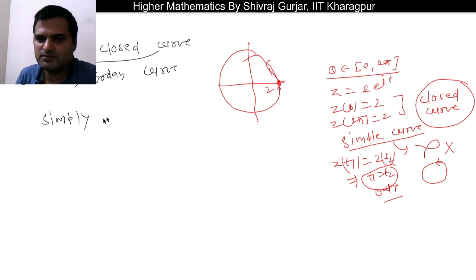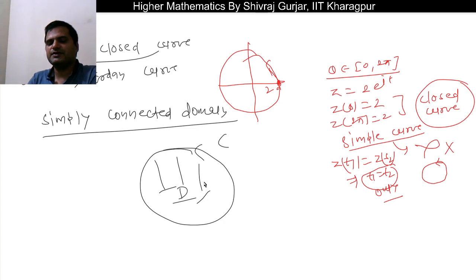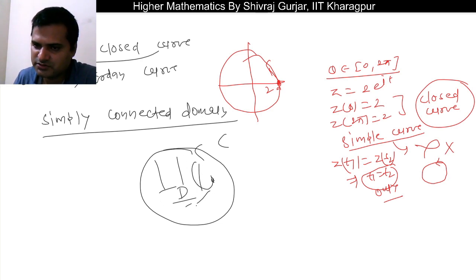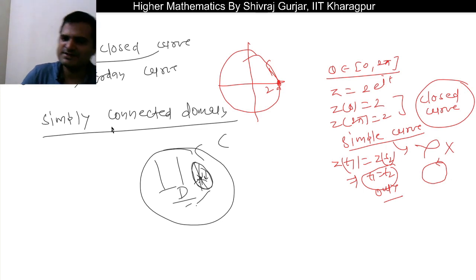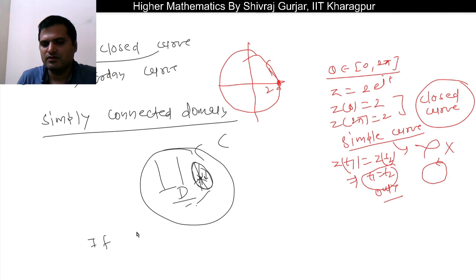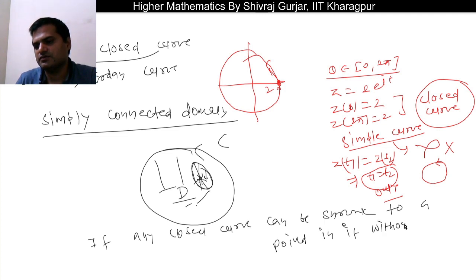This leads to the connected concept of a simply connected domain. A domain is called simply connected if any closed curve inside it can be shrunk to a point without crossing the boundary of the domain.